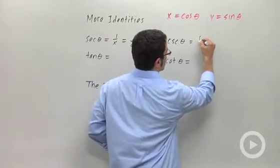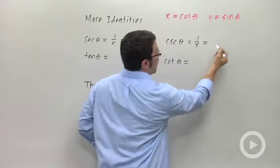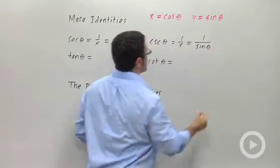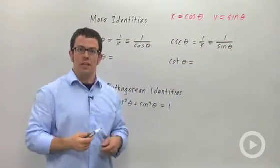Cosecant theta is 1 over y, and y is sine theta. So cosecant theta is the reciprocal of sine.